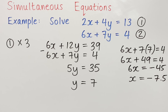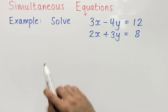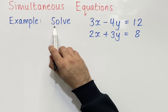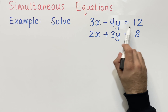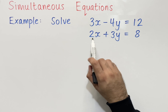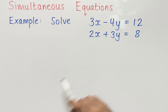And so we've worked out what y is and what x is. Let's look at another example. The question says: solve 3x minus 4y equals 12 and 2x plus 3y equals 8. Let's use elimination to do that.